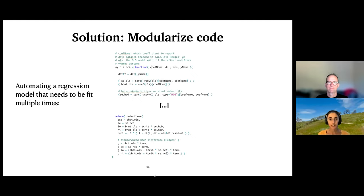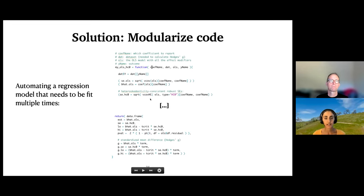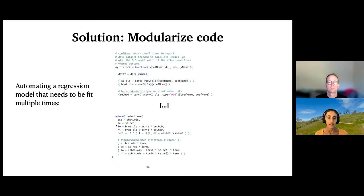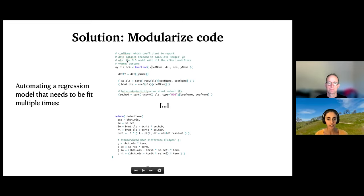One final example of code modularization for an analysis: say you want to fit a regression model and have specific requirements — robust standard errors, standardized mean differences, coefficients, p-values, and confidence intervals in a nice format. Instead of running your regression over and over for 15 different analyses, you could modularize the task of running your regression just how you like it into a function. That function's only job is to run the regression and report it just the way you want it — very easy to extend or use in another context.